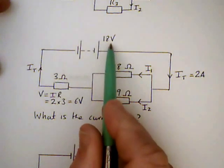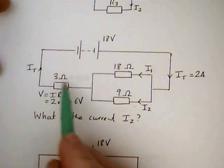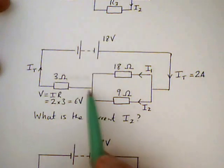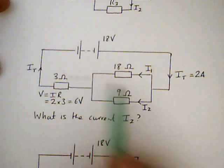Since the supply voltage is 18 and the voltage across this resistor is 6, it means that the voltage across this circuit is 12 volts. In fact the voltage across both resistors is 12 volts.